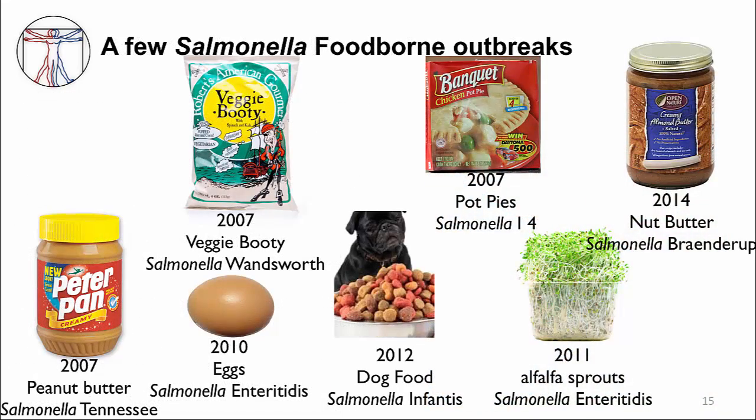Besides eggs, in the U.S. there are outbreaks of Salmonella infection from contaminated foods ranging from peanut butter to frozen food. Food contamination occurs when animal feces containing Salmonella contaminate the food — in many cases after it has been processed — with the most common animal being mice or rodents in processing plants.